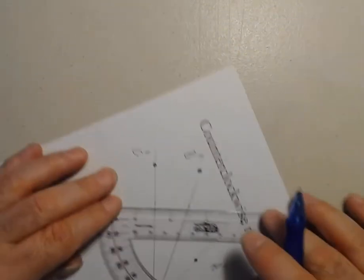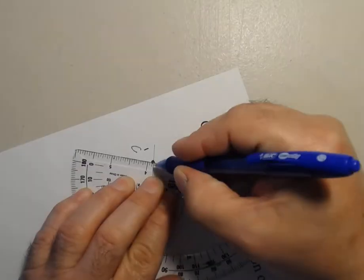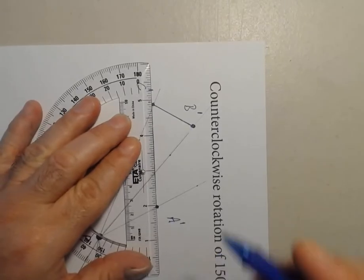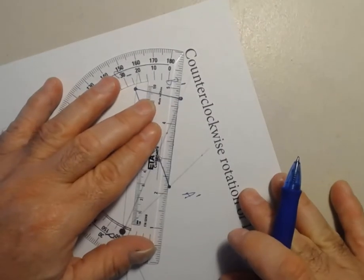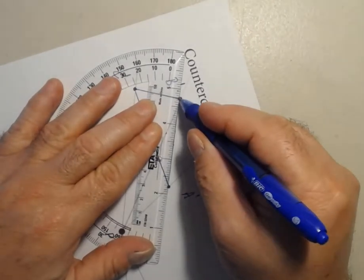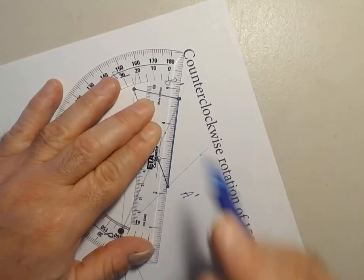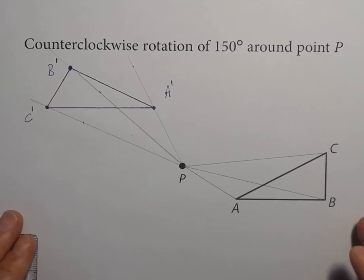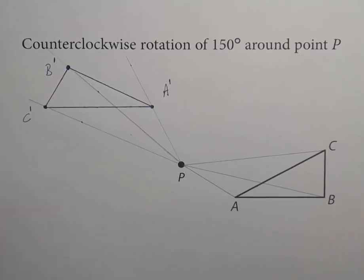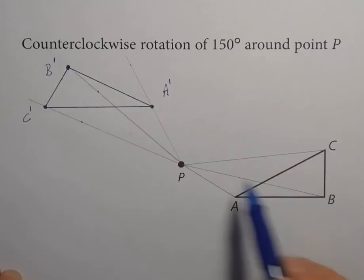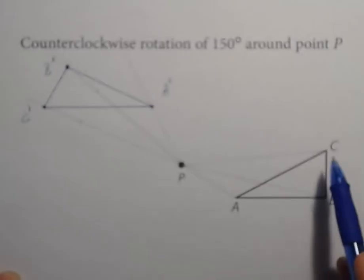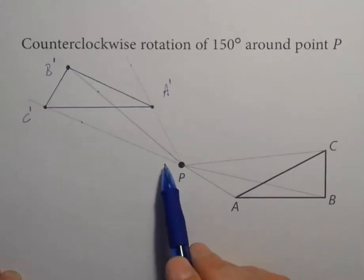Now I just connect the points together. Here is my counterclockwise rotation of 150 degrees around point P. Each one of these angles connecting from A to A prime, from B to B prime, and from C to C prime is a 150 degree angle.